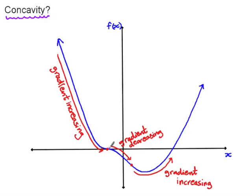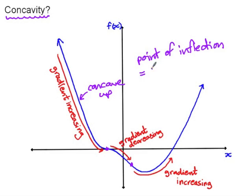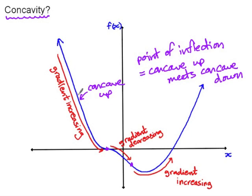Where the gradient is increasing, this is called concave up — some people find it helpful to think of this as a bowl shape, curving upwards. There's a small section between the points of inflection where the gradient is decreasing, then it starts to increase again. The gradient goes negative, zero, positive, but it's increasing throughout that section.